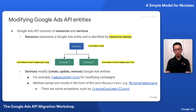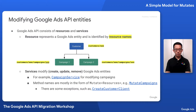Services modify by creating, updating, or removing Google Ads entities. For example, you can use campaign service to modify campaigns. Method names are mostly in the form of mutate resources, such as mutate campaigns, mutate ad groups, and mutate ad group ads. However, there are some exceptions, such as create customer client, which also modifies Google Ads entities but does not follow that naming form.